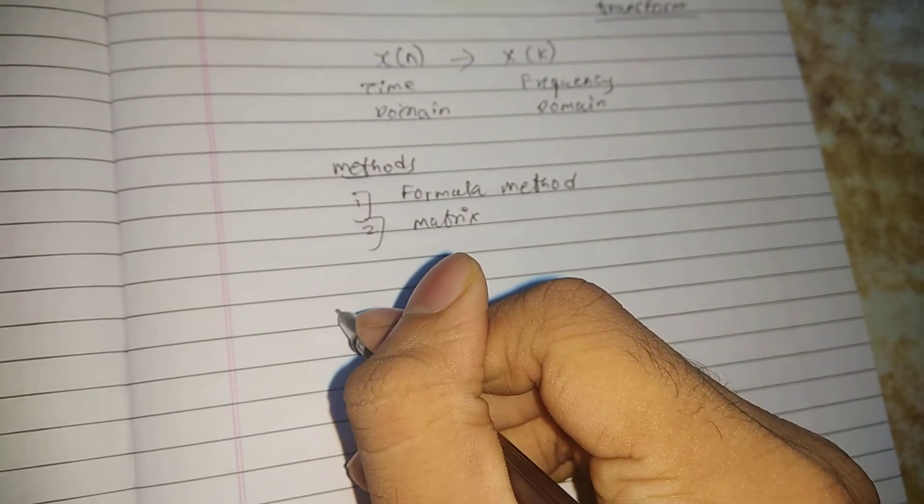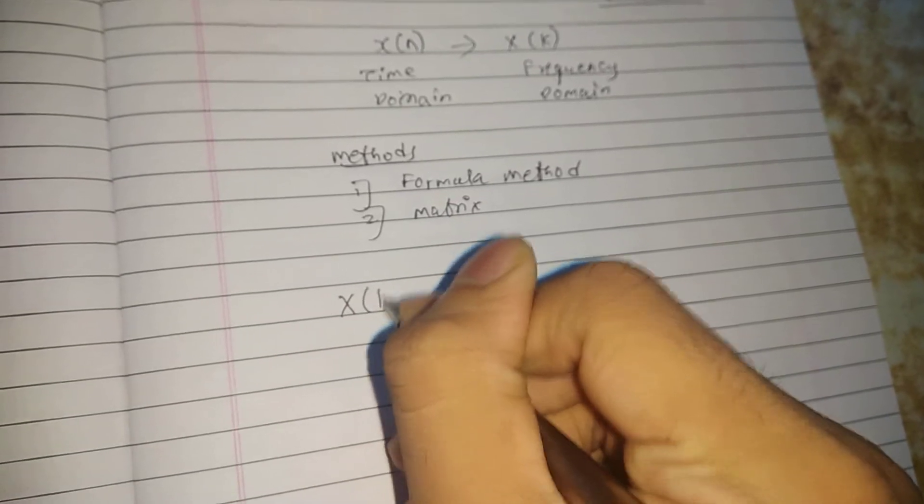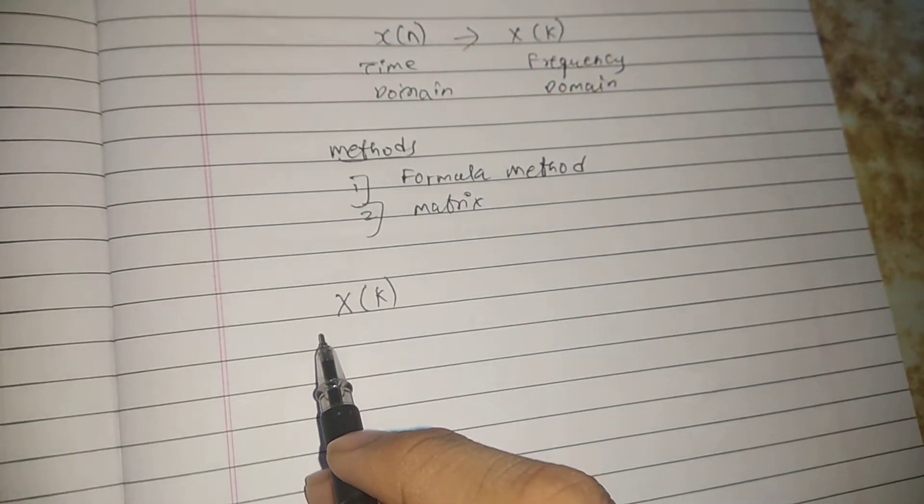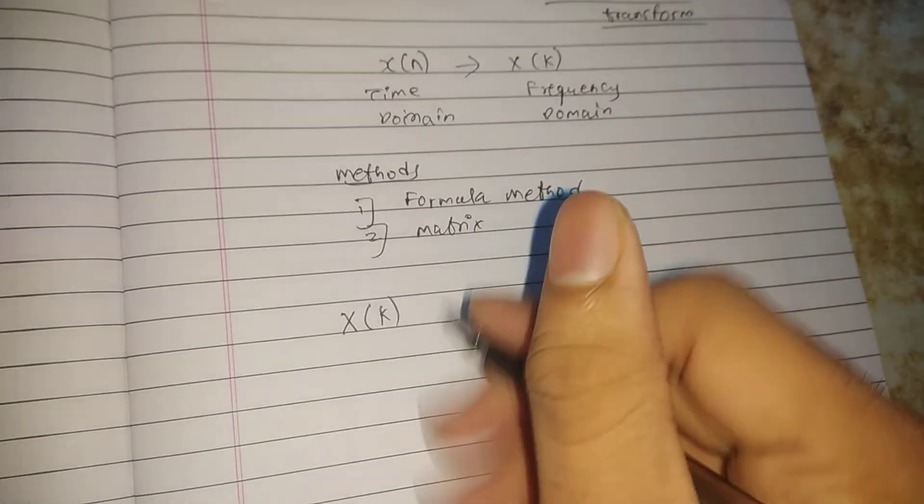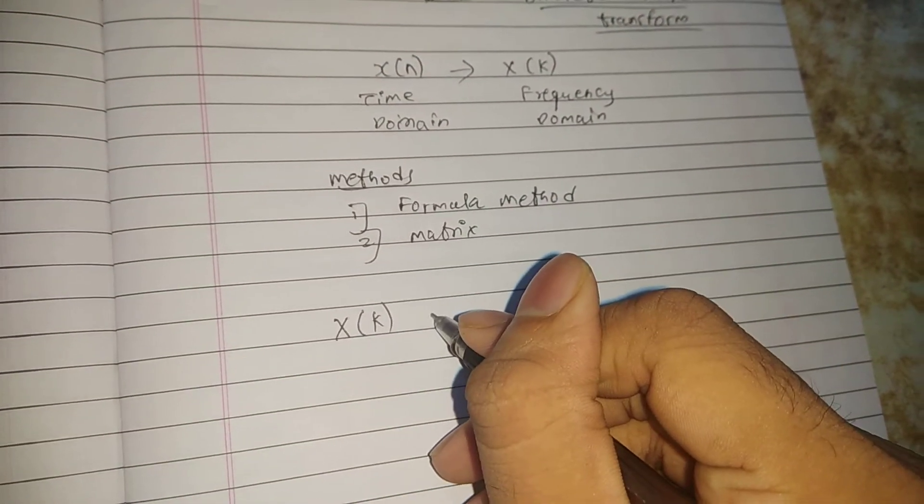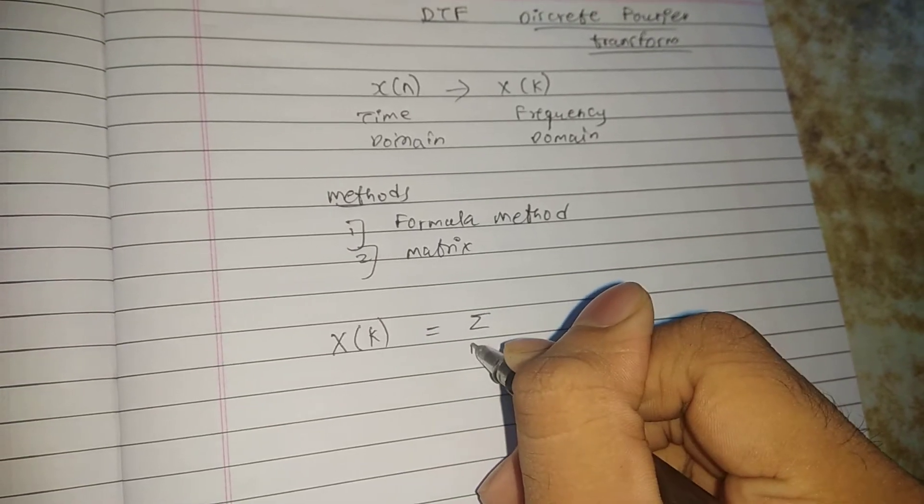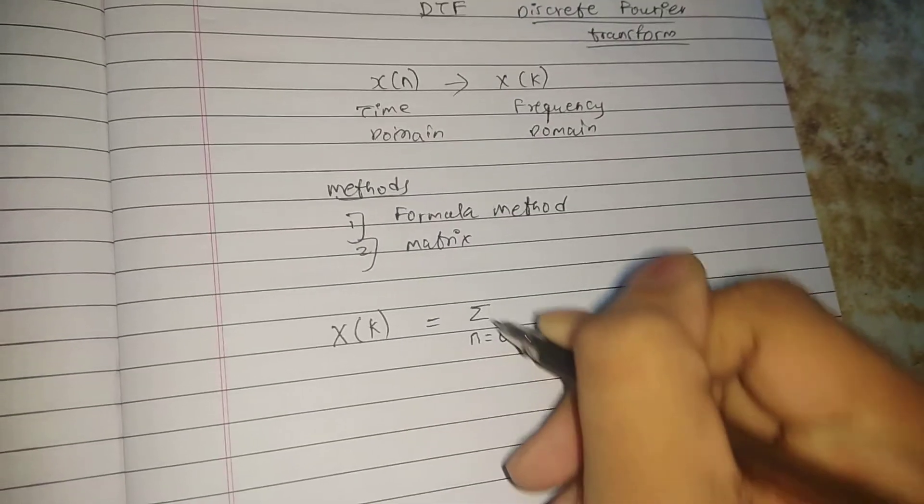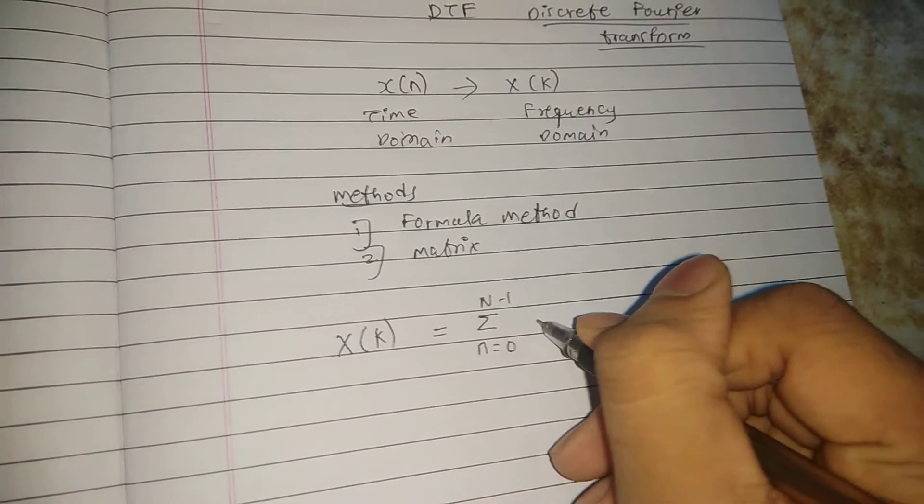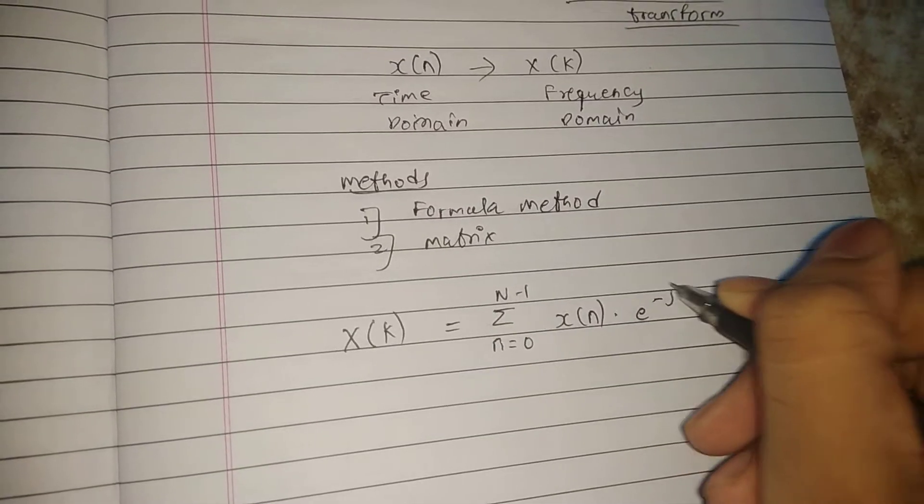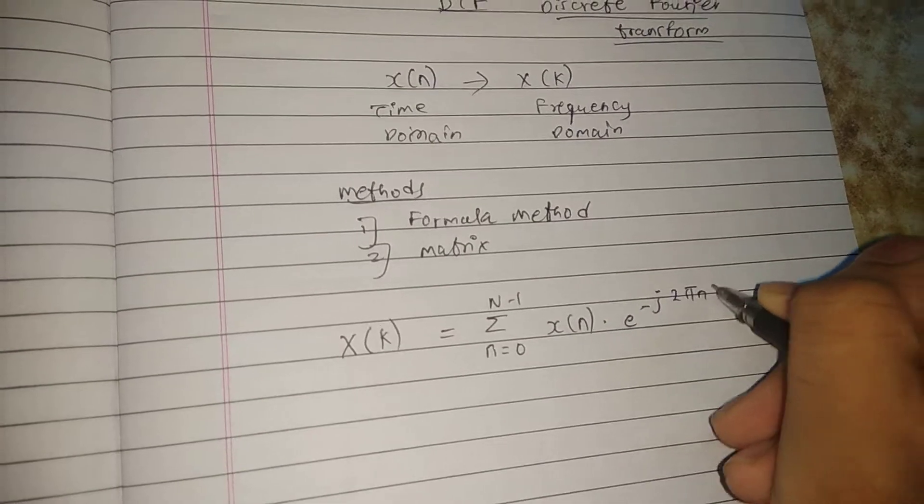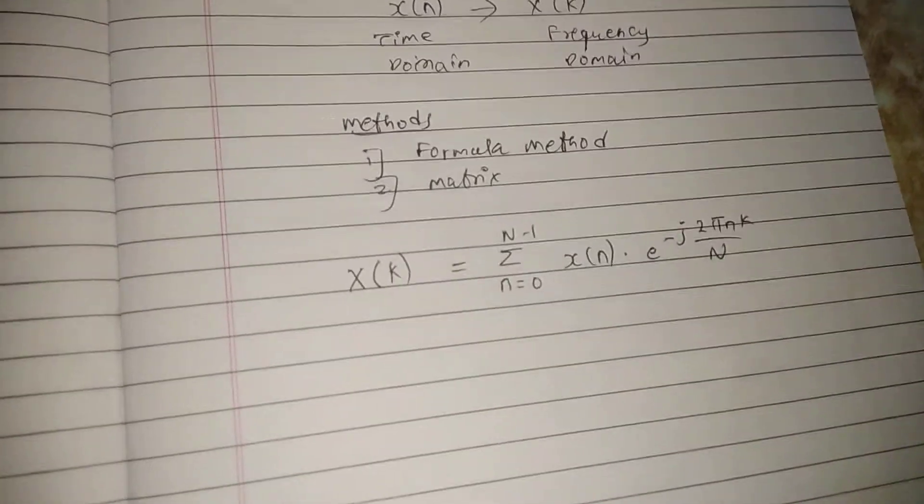First let's discuss the formula. You need to calculate x(k), the frequency domain. The x(k) formula is: summation of n equals 0 to N minus 1, x(n) times e raised to minus j 2π nk upon capital N. This is your formula.